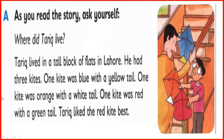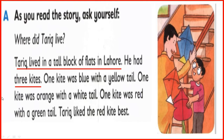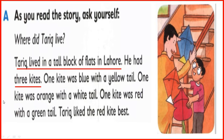Tell me, where did Tariq live? He lived in a tall block of flats in Lahore. And how many kites did Tariq have? He had 3 kites. What were the colours of Tariq's kites? One kite was blue, one kite was orange, and the last one was red. Tariq liked the red kite best.